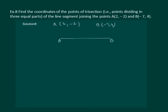What we mean by trisection is that if we have a line segment AB and it is equally divided into three parts, then we have to find the coordinates of point P and point Q. Clearly, P divides AB in the ratio 1:2, while Q divides AB in the ratio 2:1.